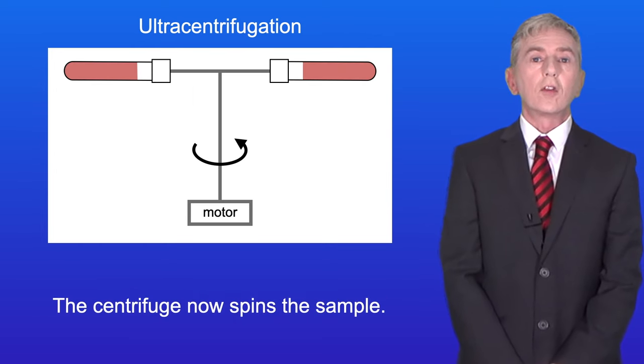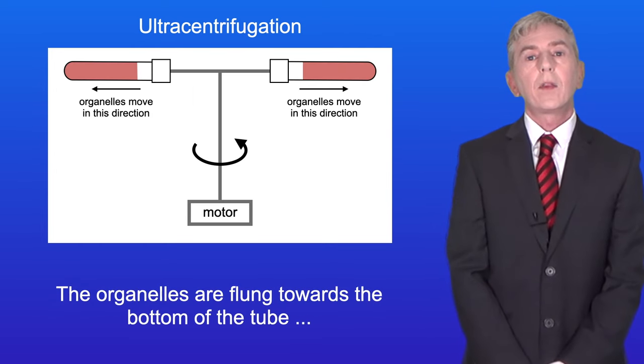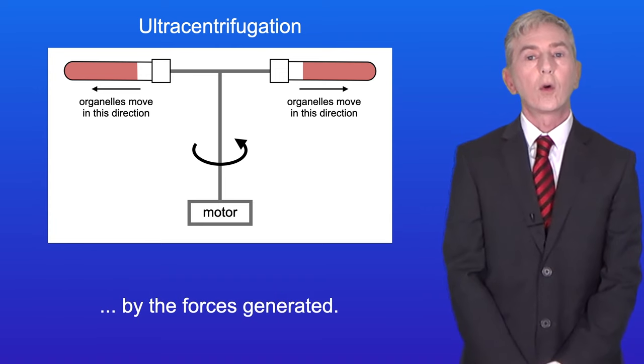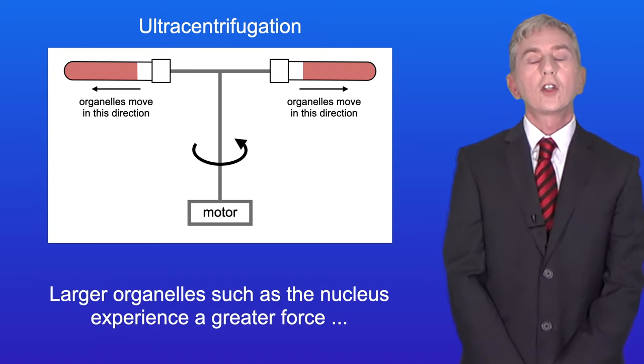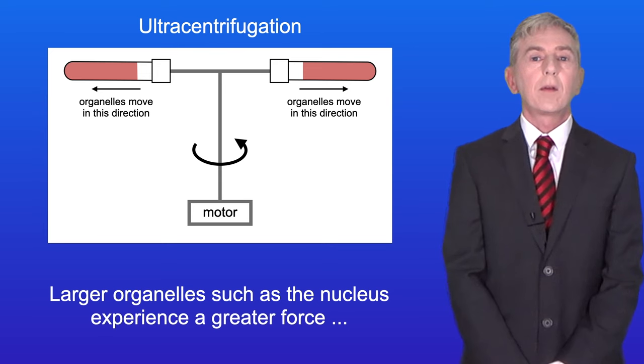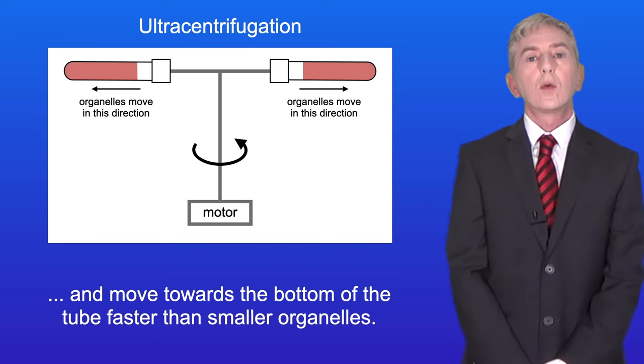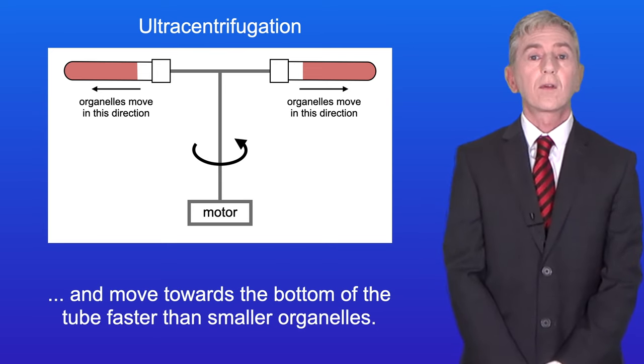The centrifuge now spins the sample and the organelles are flung towards the bottom of the tube by the forces generated. Larger organelles such as the nucleus experience a greater force and move towards the bottom of the tube faster than smaller organelles.